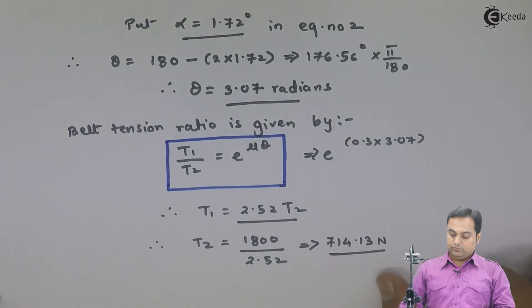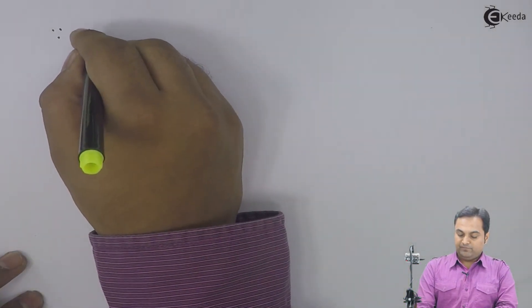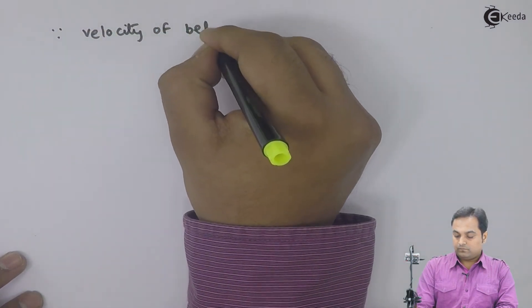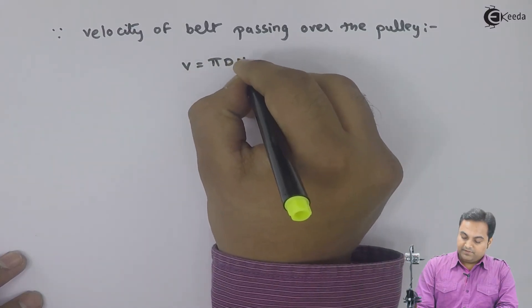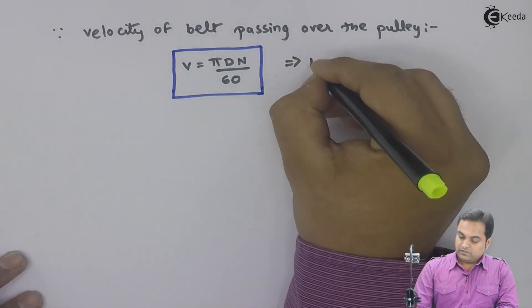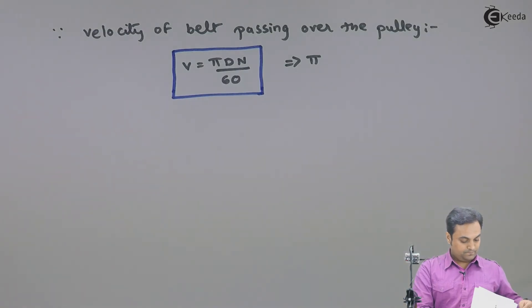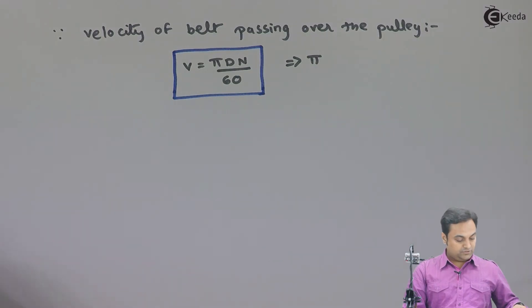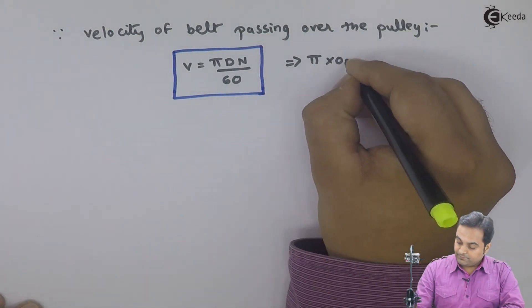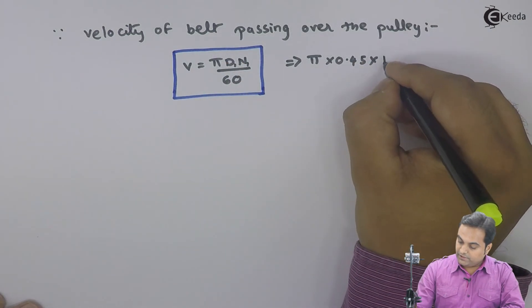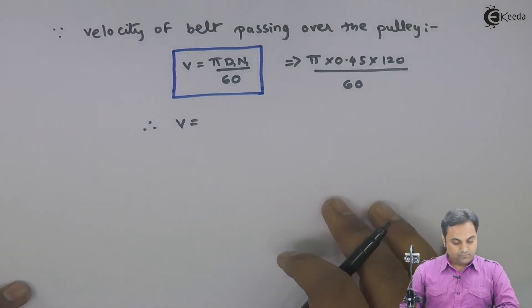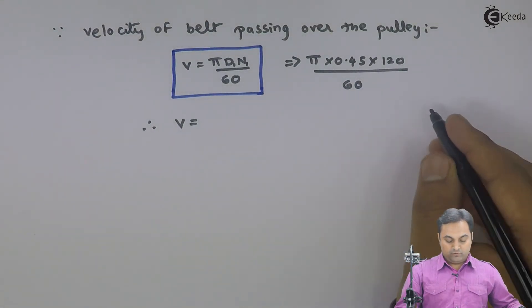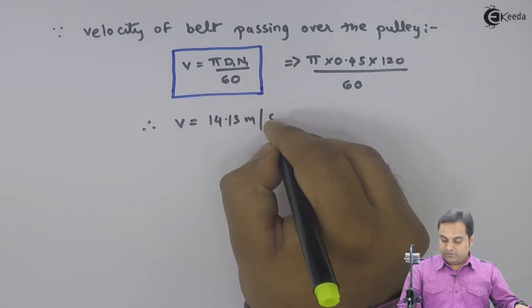Now after getting T1 and T2, I need the velocity of the belt to calculate power. The velocity of the belt passing over the pulley is V equals pi D N divided by 60. Since pulley 1 is the driver, D equals d1 equal to 0.45 meter and N equals n1 equal to 120 rpm. So V comes out to be 14.13 meter per second.